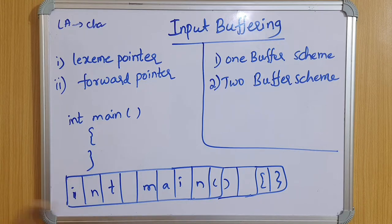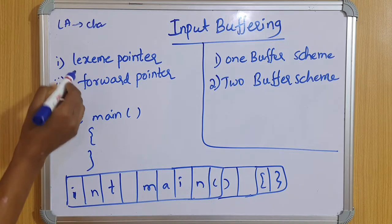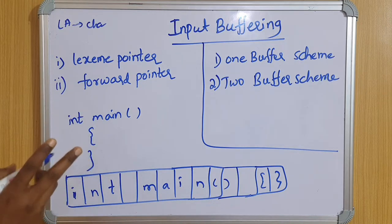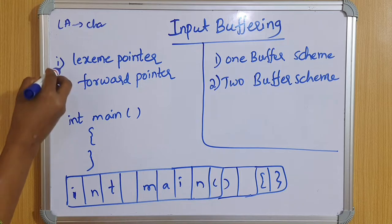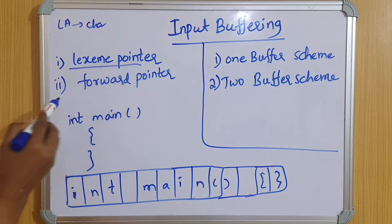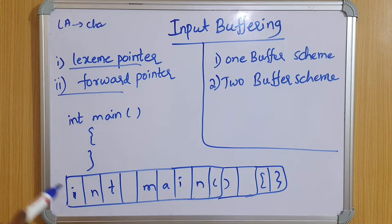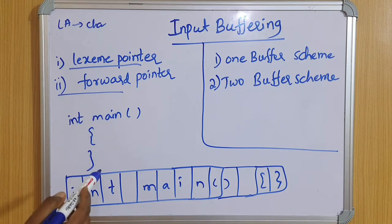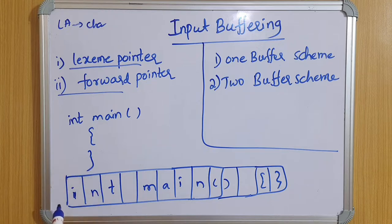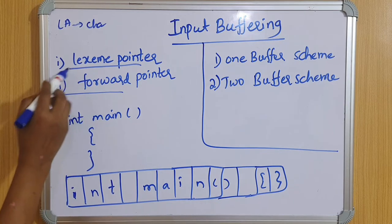The two pointers are: the first one is the lexeme pointer, and the second one is the forward pointer. The lexeme pointer marks the beginning of the current lexeme. The forward pointer scans ahead until a pattern match is found.